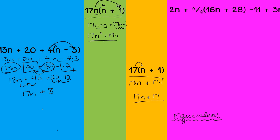So in this case, that's not going to work out for us. So far, 17n plus 8. Right now, I don't have any expressions that are equivalent to one another.